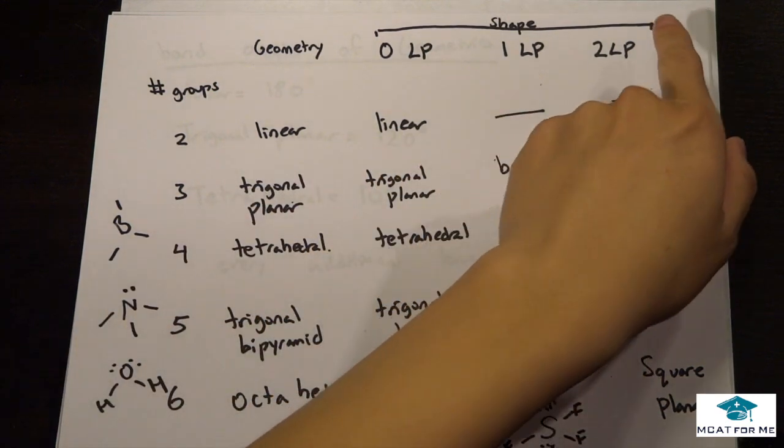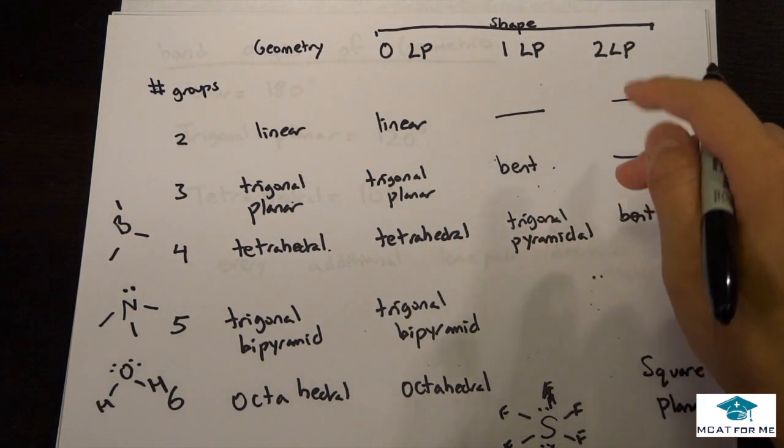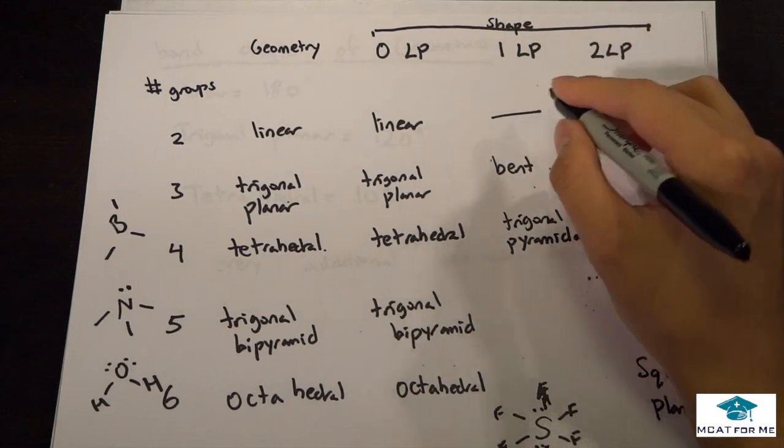I left these ones blank, and there's also a column for three lone pairs and four lone pairs as well. But for the MCAT, you don't need to memorize those.